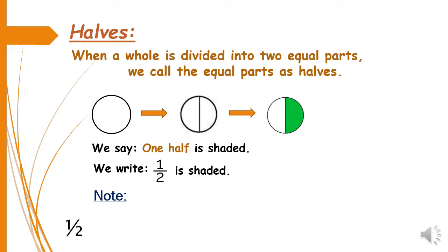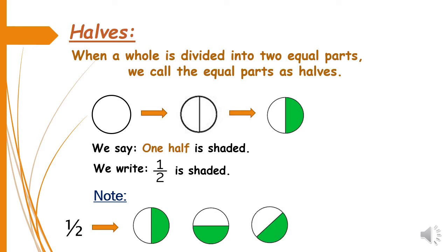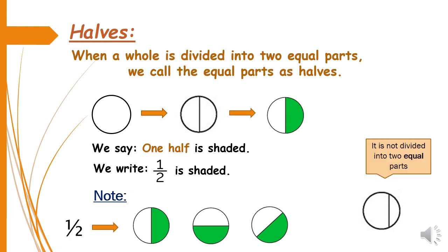1/2 is a fraction written for a whole divided into two equal parts. The whole can be divided vertically, horizontally, or diagonally — what is important is that the parts must be equal. For writing a fraction, the whole must be divided into equal parts; otherwise we cannot write the fraction. If a shape is divided into two unequal parts, we cannot write a fraction for it.